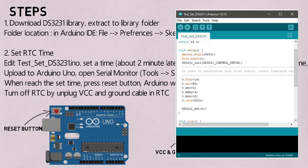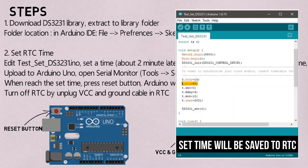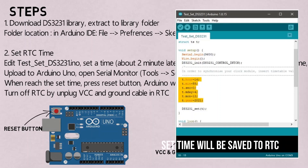This is the test set DS3231.ino file. Change each variable time such as hour, minute, second, and date. Set the time about 2 minutes later from the current time. Save the file and upload to Arduino, then open the serial monitor and press the reset button. When the actual time reaches the set time, Arduino will set the time to the RTC.